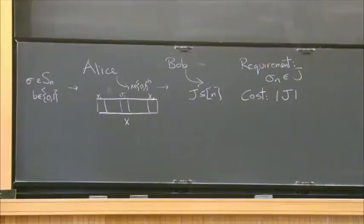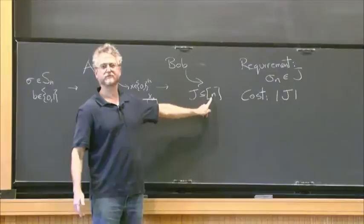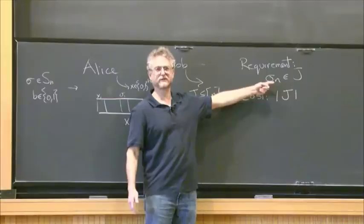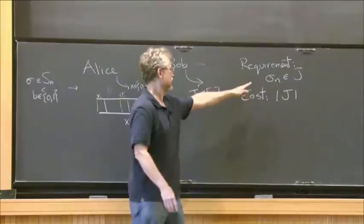Bob just looks at the vector and must output a subset of {1,...,n} with the requirement that the subset should contain sigma_n, the last thing that arrived for Alice. He could just output {1,...,n}, but he pays for the size of the set.